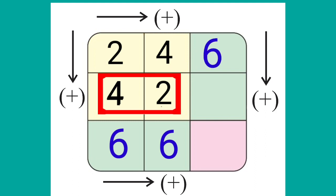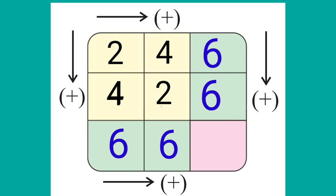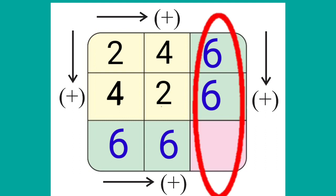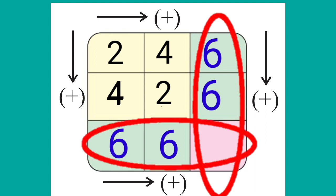In the second row, 4 plus 2 is also 6. Now we can see at the right side from top to bottom, adding 6 plus 6, and at the bottom adding from left to right, we get 6 plus 6 is equal to 12. We will write 12 in the common box.